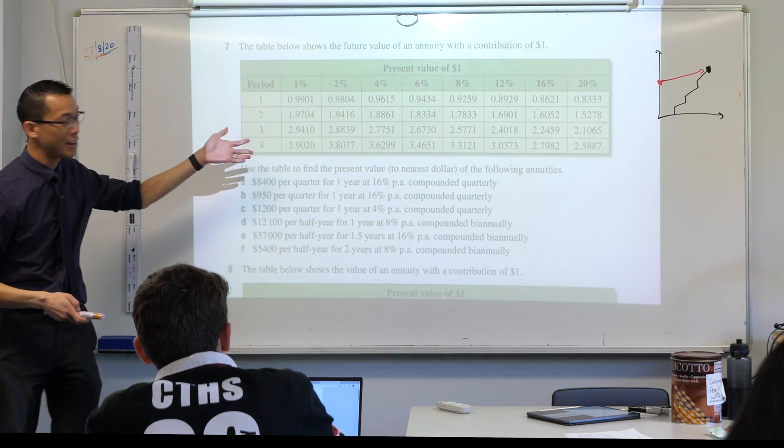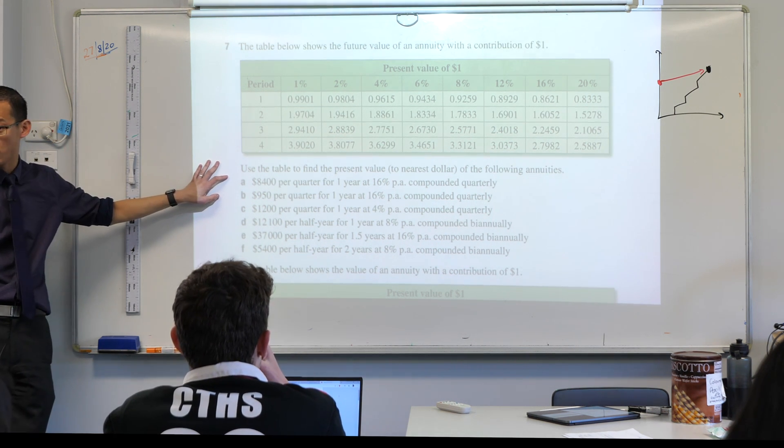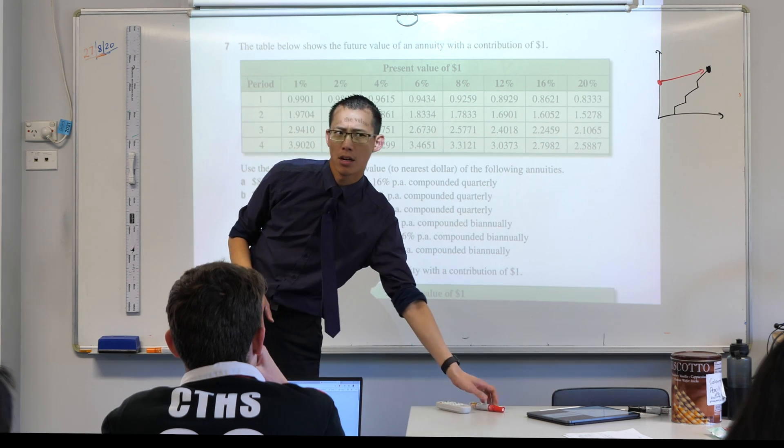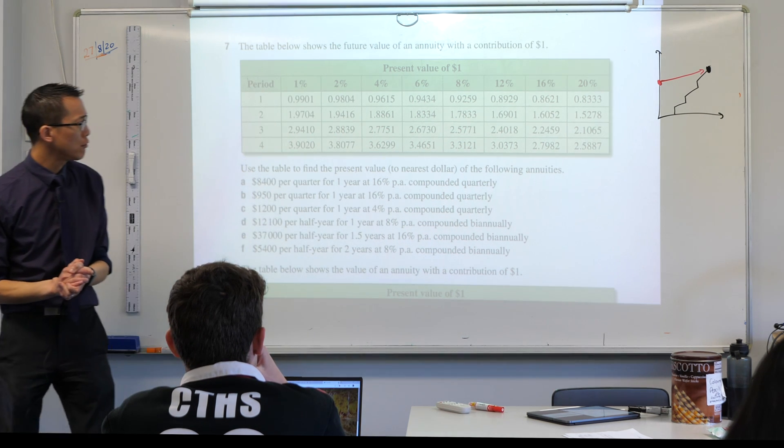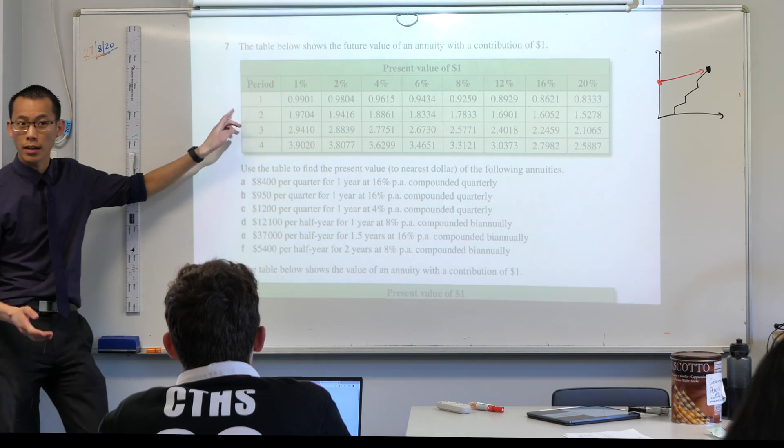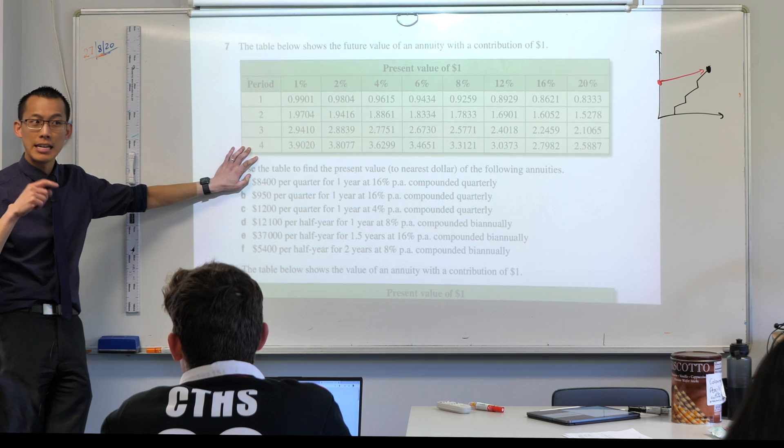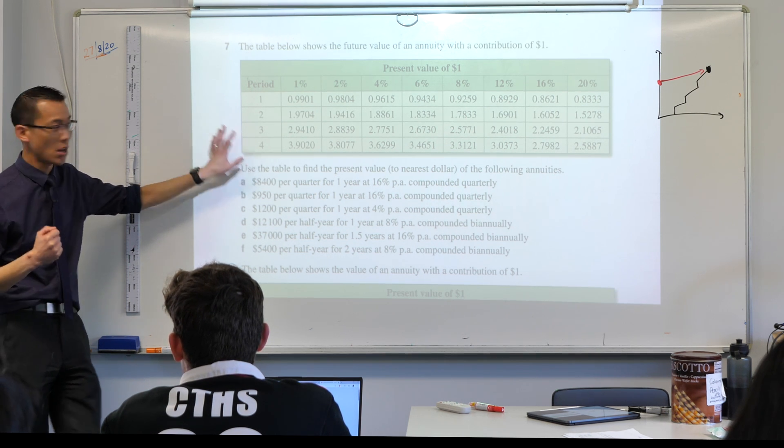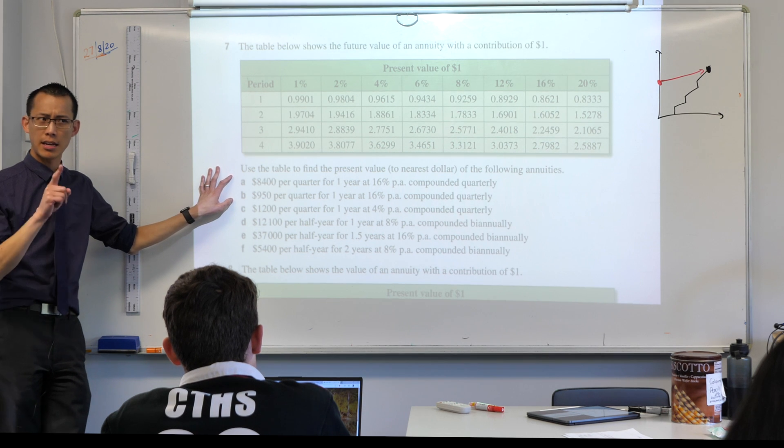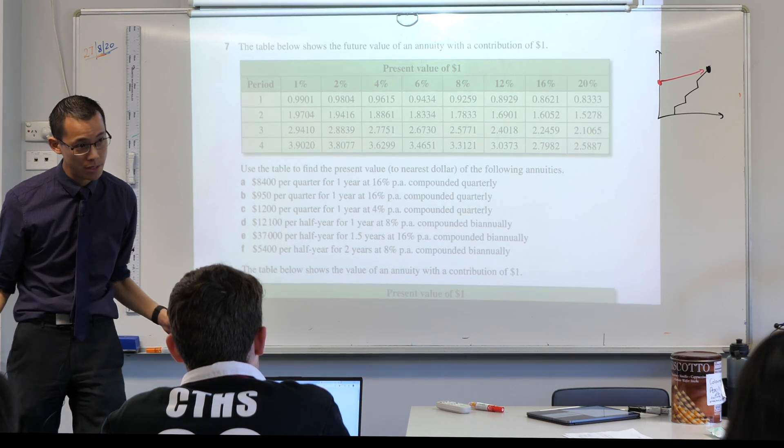Now, this table enables us, just like the tables we looked at yesterday, to calculate these present values. But one of the things you'll notice about it is this is a different kind of table. If you can, have a look at yesterday's table and compare it to this one. The first thing you'll notice is, as you'd hope, in yesterday's table, which is about future values, all the numbers are bigger than one.